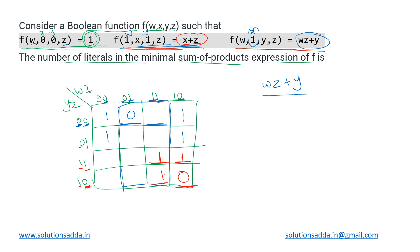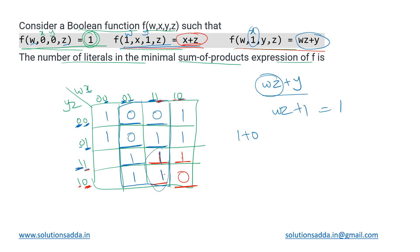Continuing: where w=0, z=1, y=0 — oring with y=0 gives zero. Where w=1, z=1, y=0: wz=1, plus zero gives one. For the last four cells where y=1: wz OR 1 always equals one, so these four cells all take the value one. With the previously set ones, the K-map is now filled using all three expressions.